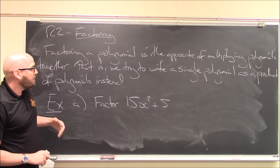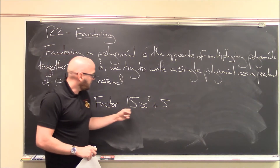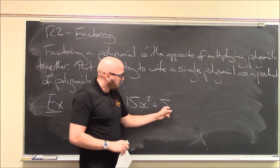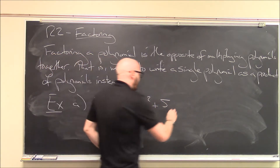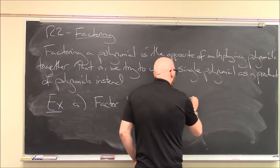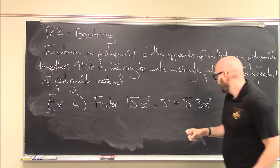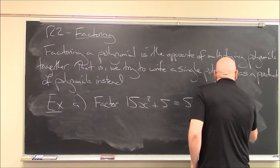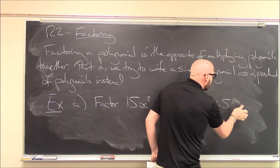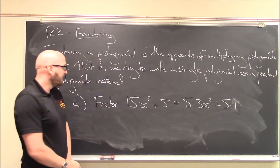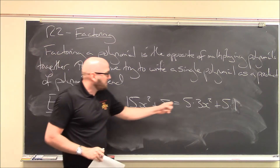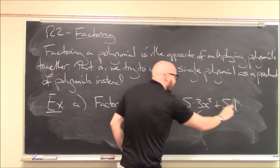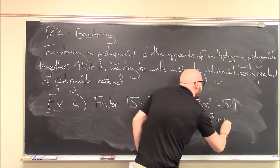So how do you factor? Well, you look for common divisors for each term. What I'll notice here is that 15x squared — I can divide that perfectly by 5, because 5 goes into 15 three times. And this term 5 is also divisible by 5. So I can write this as 5 times 3x squared, since 5 times 3 is 15, plus 5 times 1.